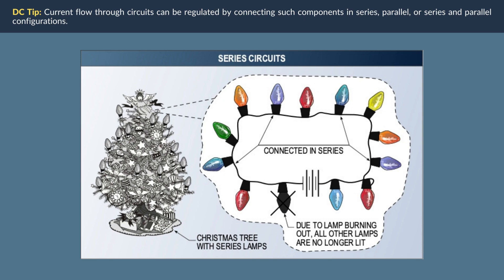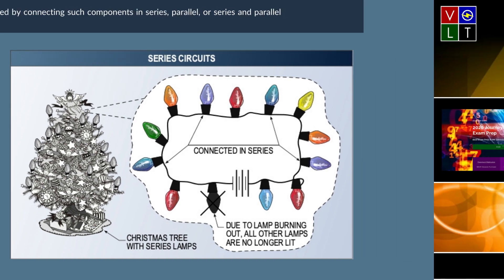In series circuits, all the current flowing in the circuit must pass through each load in the circuit. For example, if a number of lamps are connected in series and one of the lamps should burn out, the circuit is broken and the other lamps are not lit. The illustration shows a series connected circuit of lamps and what happens if one should burn out.